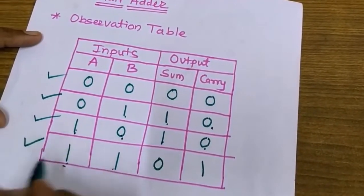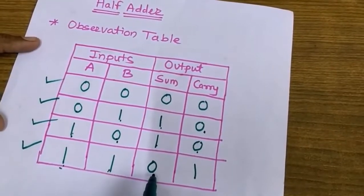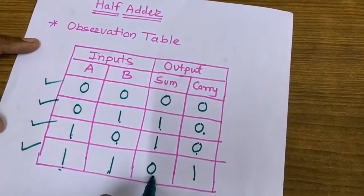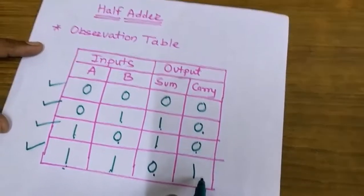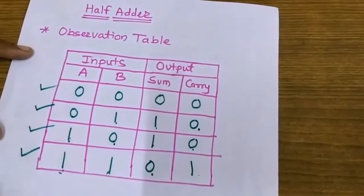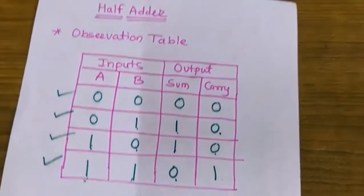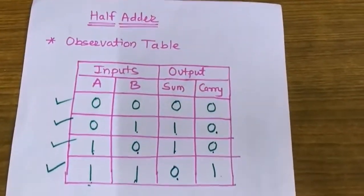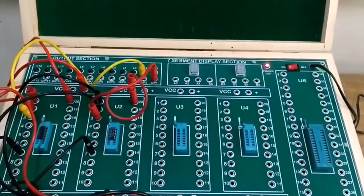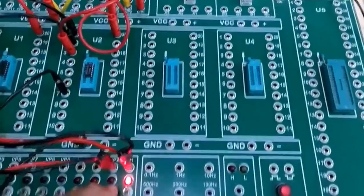Manually verifying: one plus one gives sum equal to zero and carry equal to one. By applying all possible input combinations you can verify the status of sum and carry on the LEDs. That is all about the half adder circuit.